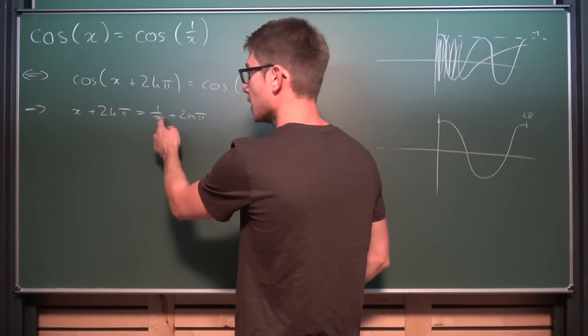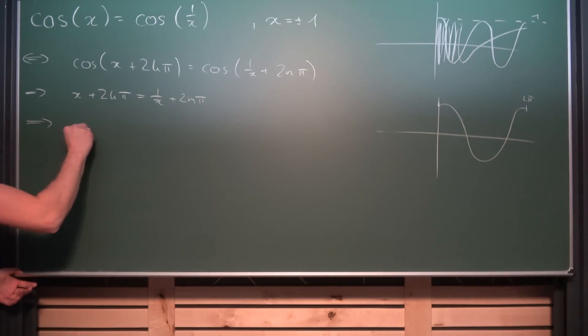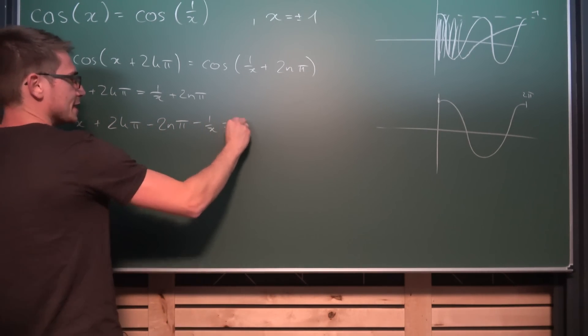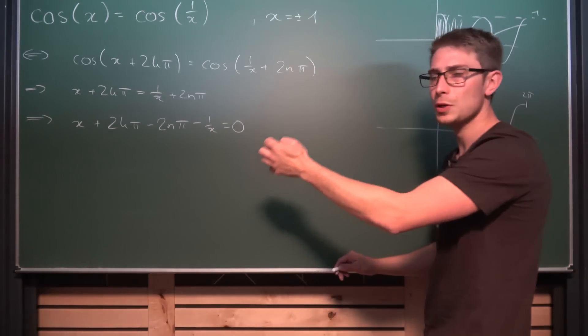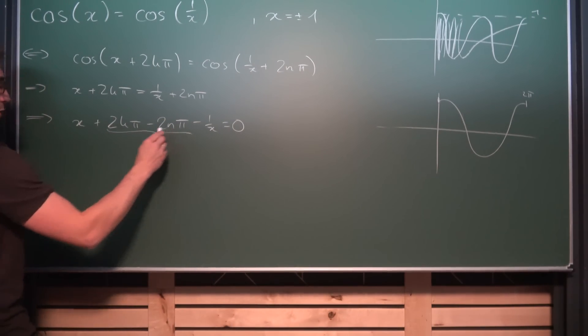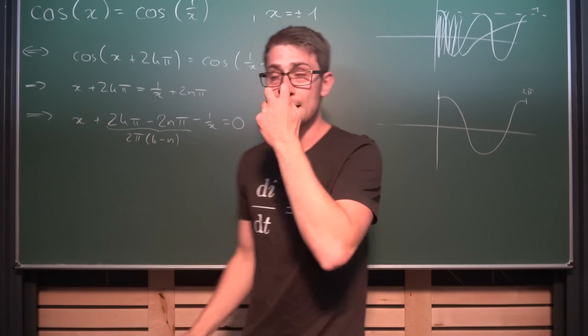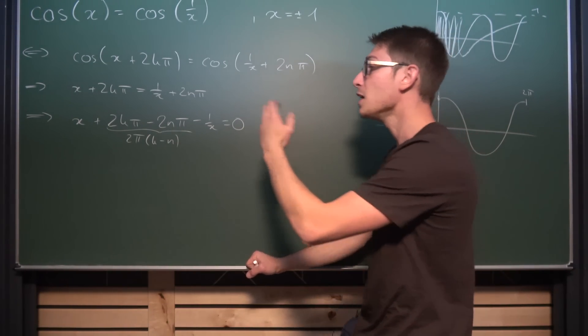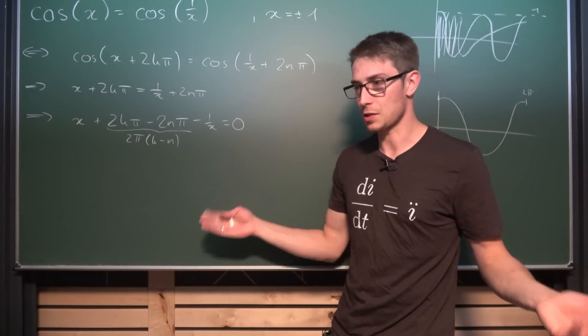And now we can just simply start solving for x. So the first thing we do is we can subtract 1/x on both sides, we can also subtract this 2nπ part. Meaning what we are going to get is x + 2kπ - 2nπ - 1/x is equal to 0. What we can do is we can factor out the 2π and we are going to be left with k - n. Since k and n are both positive and negative integers and positive and negative integers are closed under addition and also its inverse, we can just say that k - n is once again an element of the positive or negative integers.